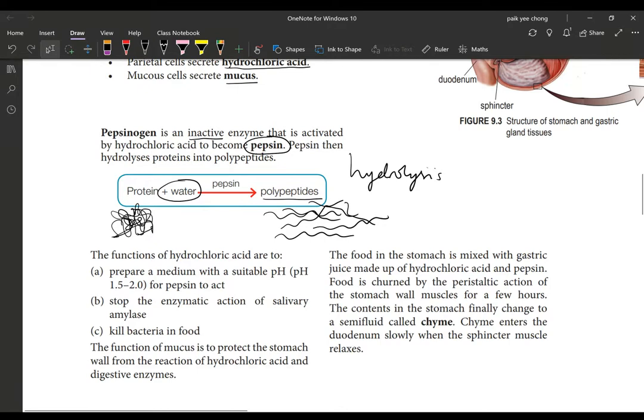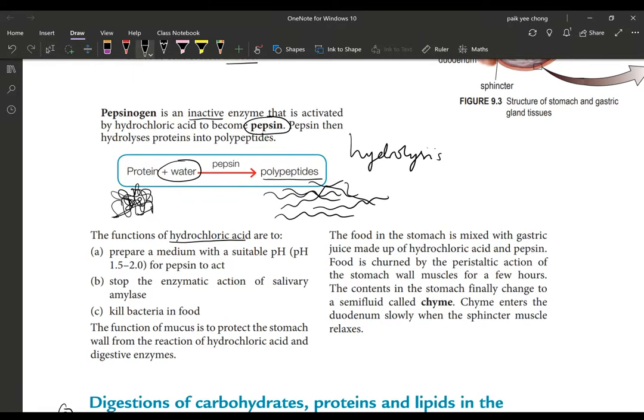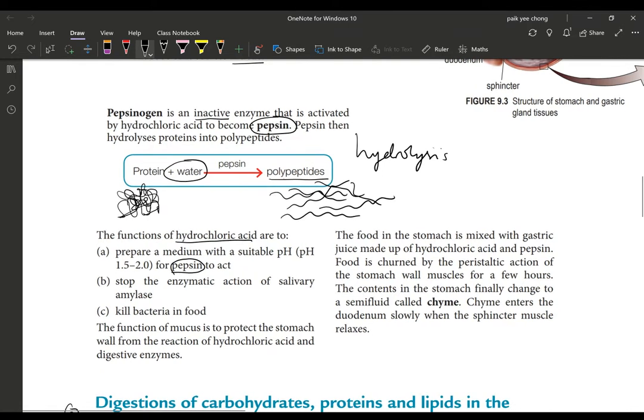The function of hydrochloric acid is to prepare a medium which is suitable for pepsin. Pepsin requires an acidic pH of 1.5 to 2, so it will work very well in this acidic environment and your digestion will happen at a fast rate.